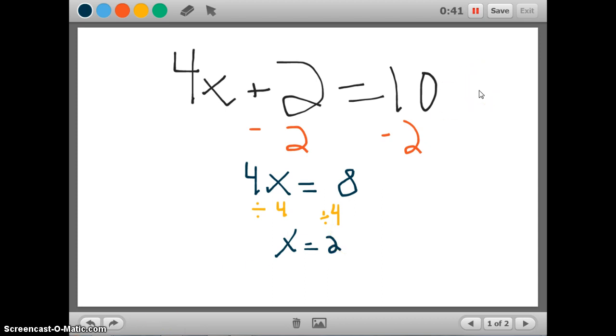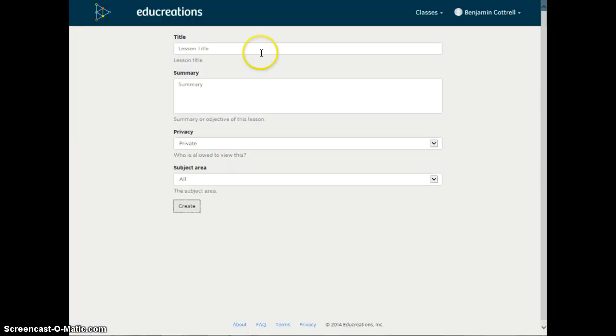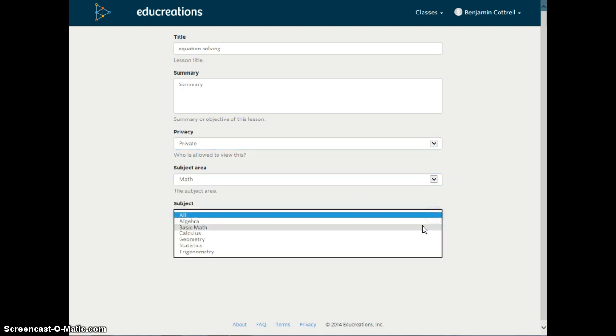Once I am satisfied with that video, I can click save. And then, it gives me the preview option, or I can start over. And when I save it, at this point, I can give it a title. We'll just call it Equation Solving. I can give a brief summary if I want. I can set the privacy. I can make it private, or I can make it published. And I can also describe what content area it's in. It's in math, and this would be an algebra problem.